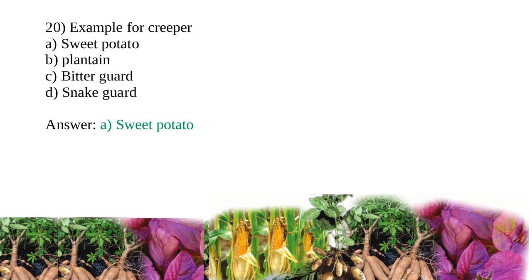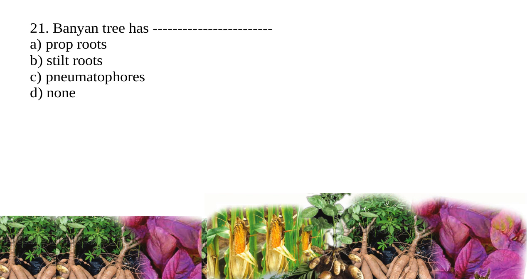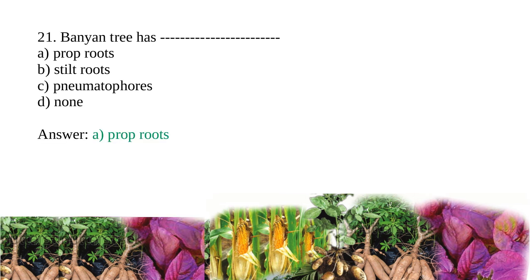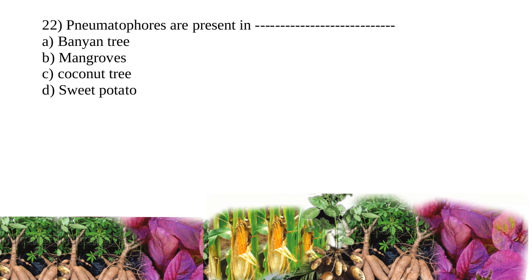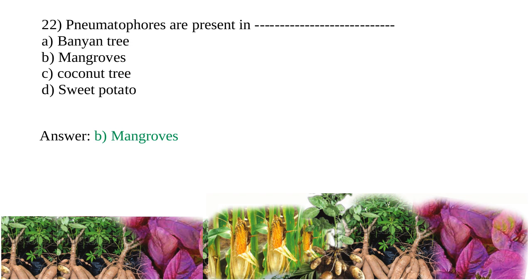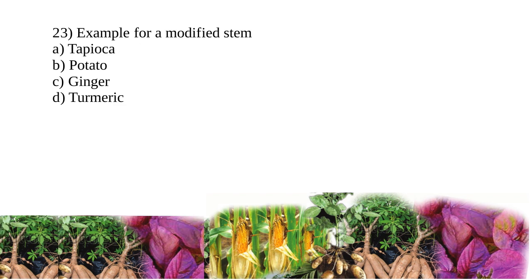Question 21: banyan tree has — prop roots, stilt roots, pneumatophores, or none? The answer is prop roots. Pneumatophores are present in — banyan tree, mangroves, coconut tree, or sweet potato? The answer is mangroves. Question 23: example for a modified stem — tapioca, potato, ginger, or turmeric? The answer is potato.